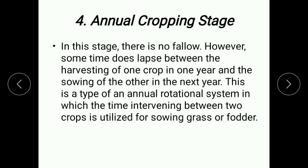The fourth stage is the annual cropping stage. Again, as population increases, it moves to the annual cropping stage. There is sometimes a short lapse between the harvesting of one crop in one year and the sowing of the next in the following year. This is a type of annual rotational system in which the time intervening between two crops is utilized for sowing grass and fodder.